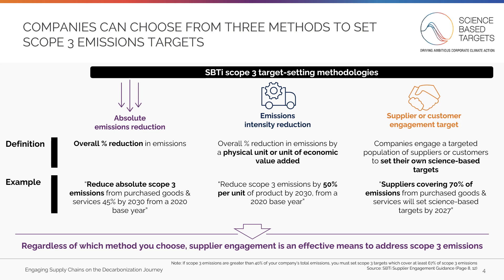As a general note, according to SBTi criteria, Scope 3 targets are required for your company if your Scope 3 emissions are greater than 40% of your total emissions. You can determine whether this applies to you based on your greenhouse gas inventory. If you are above the 40% threshold, you must set Scope 3 targets which cover at least 67% of total Scope 3 emissions, using one or a combination of the methods on this page.